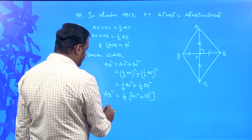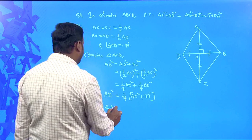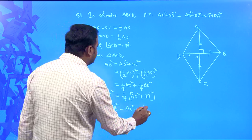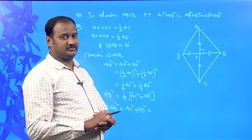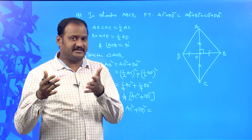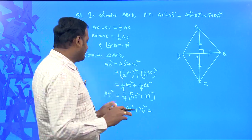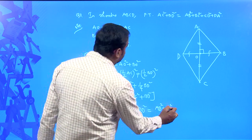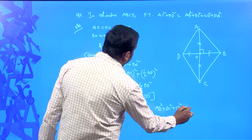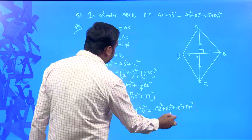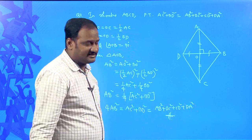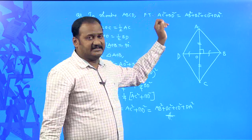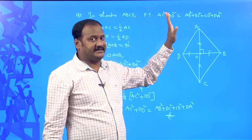Since 4AB² = AB² + AB² + AB² + AB², and all four sides of a rhombus are equal, we can write: AB² + BC² + CD² + DA² = AC² + BD². Therefore in any rhombus, the sum of the squares of the diagonals equals the sum of the squares of all four sides.